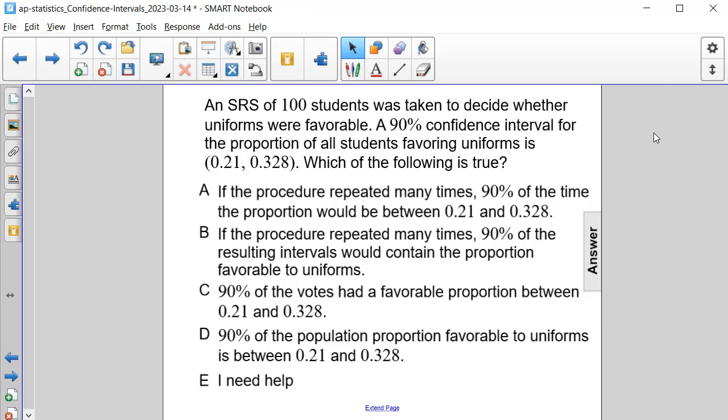An SRS, or simple random sample, of 100 students was taken to decide whether uniforms were favorable. A 90% confidence interval for the proportion of all students favoring uniforms is between 0.21 and 0.328. Which of the following is true?